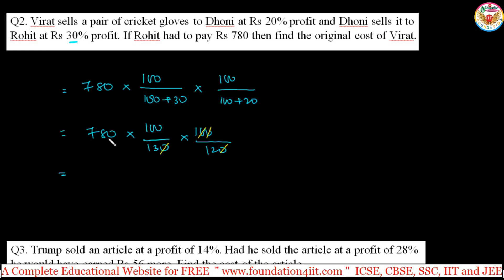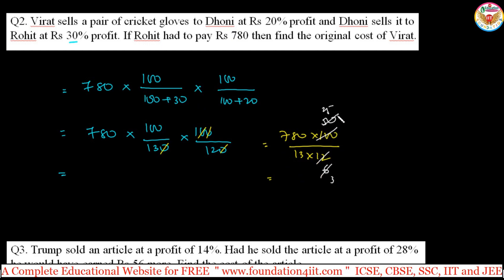780 into 100 divided by 13 into 12. Cancelling: 780 divided by 13 gives 60, then 60 divided by 12 gives 5, and 5 into 100 is 500. So 20 into 25 is 500 rupees — that is the original cost price. This is the technique you can apply.